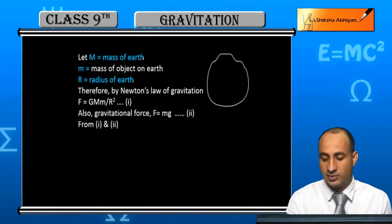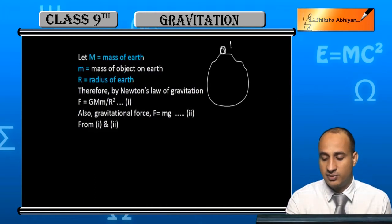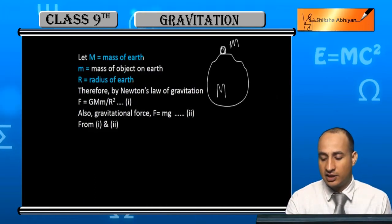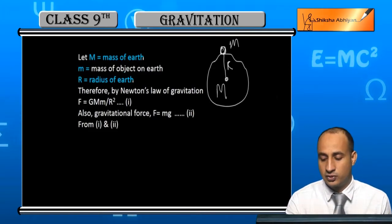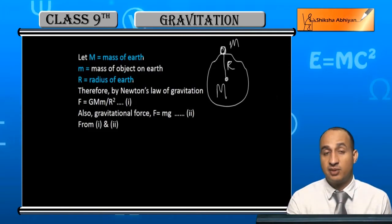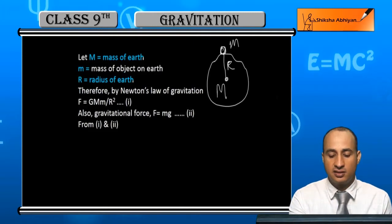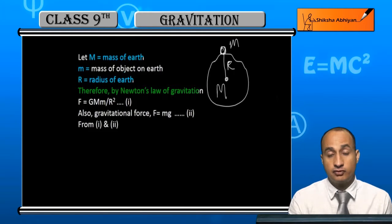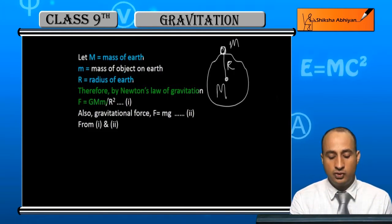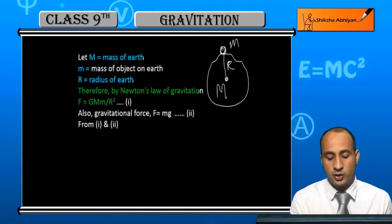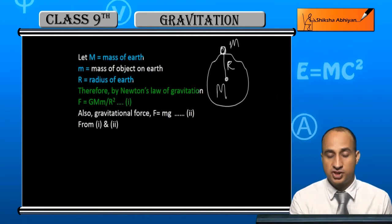Here is earth with mass M, and here is mass m. The radius is the distance between the earth and the object. Therefore by Newton's law of gravitation, F = G M m / R². This is equation 1. This is gravitational formula.